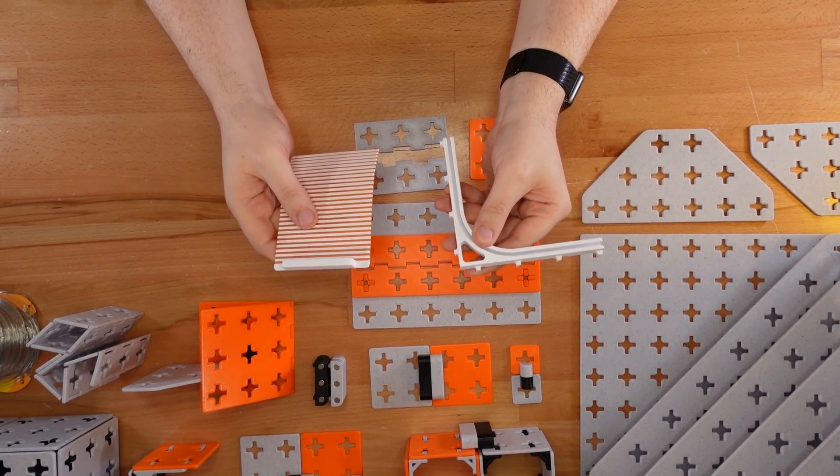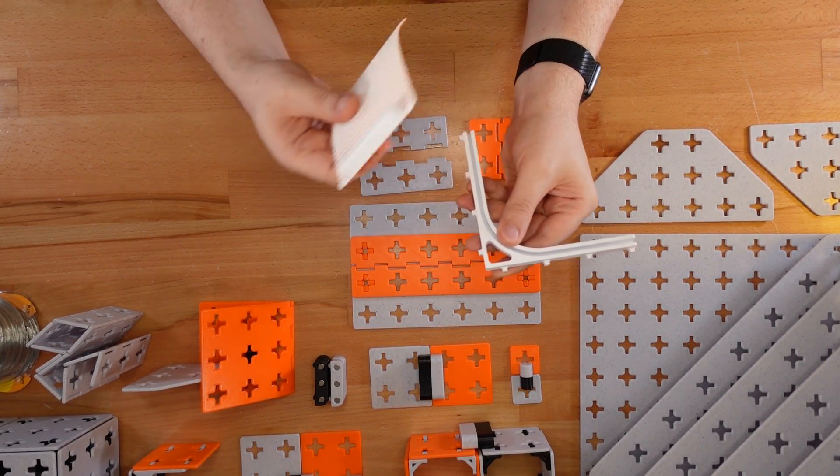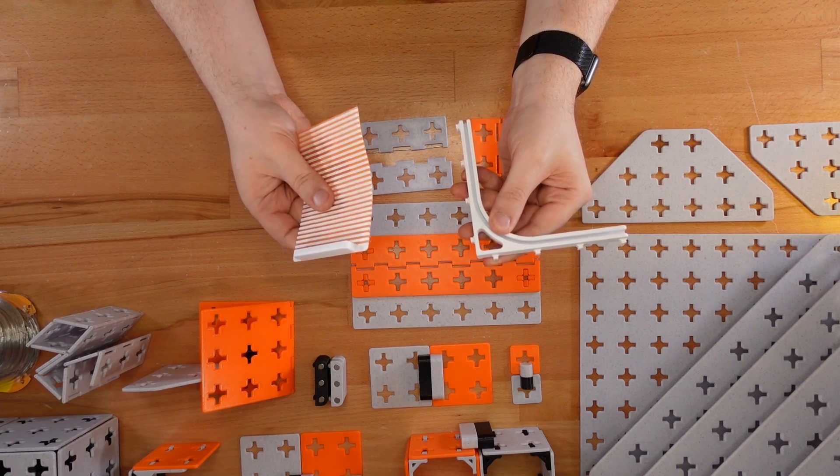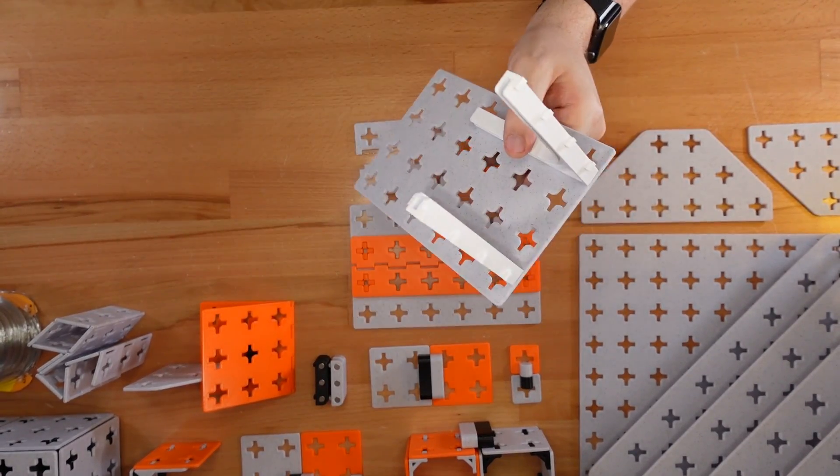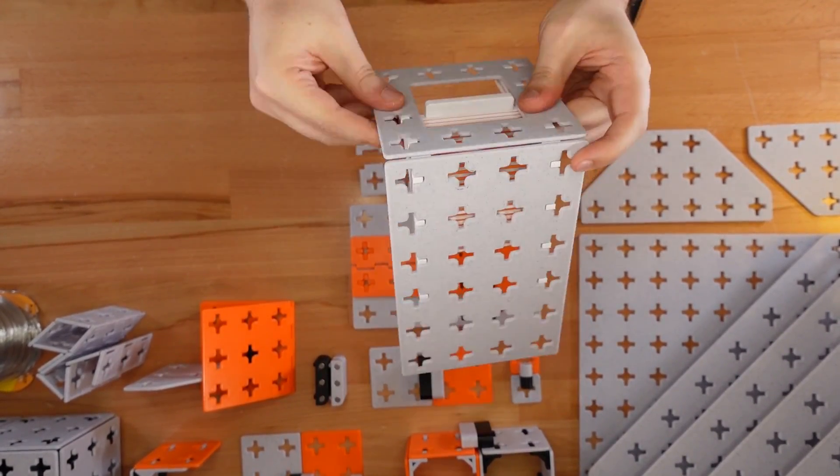It all comes down to two simple pieces, the clip-on track and a flexible shutter. Just clip in two tracks, slide in the shutter, and then seal everything up with a window panel.